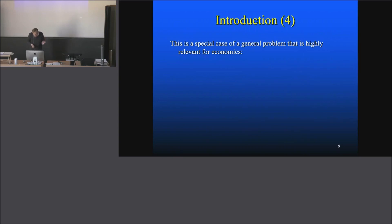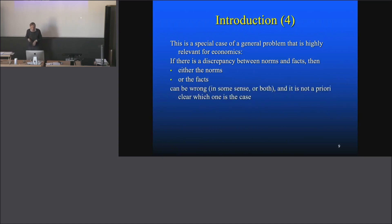These are just the two extreme positions. If you have two things—one normative or describing something general and a particular case—and if they don't coincide, you don't know where the mistake is. Something is wrong, but you have no idea where, and the principal possibilities are these two. This is a special case of a general problem that's highly relevant for economics, and I'm coming again and again back to this problem.